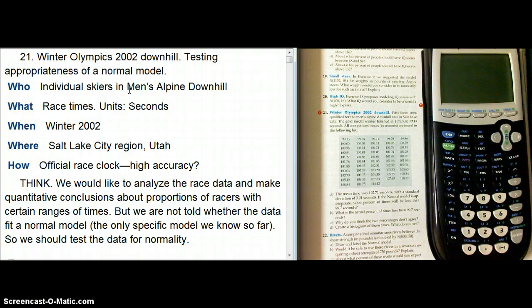We've got individual skiers times, race times, from the men's alpine downhill in the Winter Olympics 2002. The units are in seconds. It was in Winter 2002, obviously, in the Salt Lake City region in Utah. It wasn't actually in the city, of course, but this was probably in Park City or somewhere nearby. And presumably these are official race clock times to high accuracy. Notice they're to the hundredths of a second.